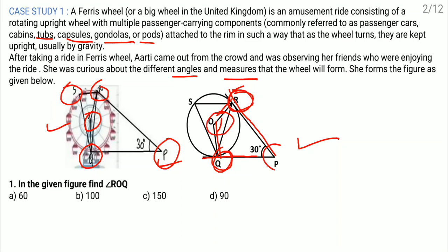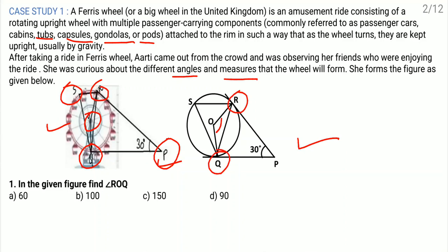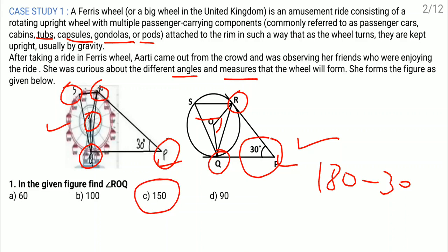The sum of these two angles will become 180. Since the sum of all angles of a quadrilateral equals 360 degrees, after accounting for the two 90-degree angles, the sum of the remaining two angles will become 180. Here one angle is 30 degrees, so from 180 if we remove 30 degrees, what is left is 150. Therefore, the measurement of angle ROQ is 150 degrees, and option C is the correct one.